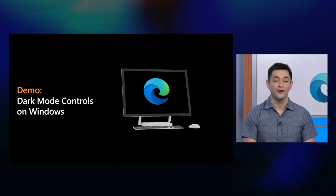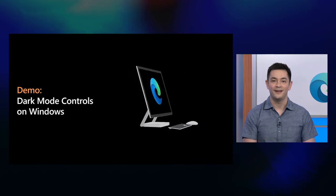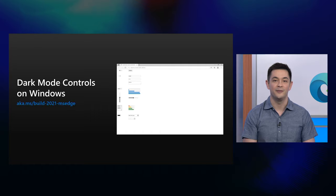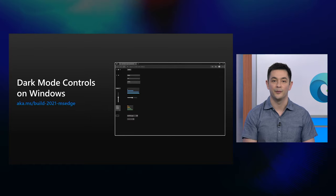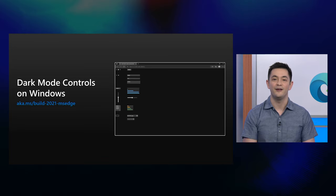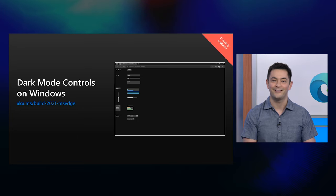Another capability I'd like to cover is dark mode controls on Windows. Last year, we partnered with our friends in Chromium to refresh the look and feel of form controls, making them more modern, accessible, and touch-friendly than ever before. This year, we continued this partnership by landing dark mode support on Windows. For developers using native form controls on sites that support dark mode, no extra work is required to create experiences that look great no matter how and when they're viewed. Dark mode controls are already available on desktop today.